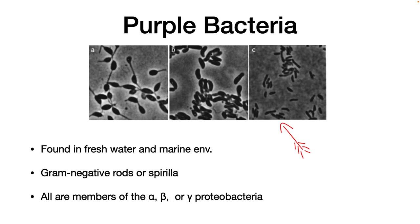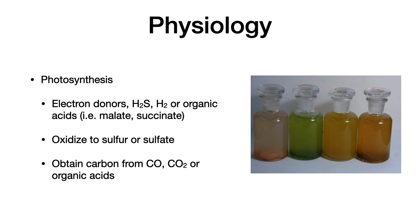All of them are members of the alpha, beta, or gamma proteobacteria. The images show examples such as Rhodomicrobium vannielii, Rhodopseudomonas acidophila, and Rhodopseudomonas palustris. The physiology of the purple bacteria. When performing photosynthesis, they can use a wide variety of electron donors, including hydrogen sulfide, hydrogen gas, and organic acids, such as malate or succinate. If they use hydrogen sulfide or other sulfur compounds, they will oxidize them to sulfur or sulfate. They obtain their carbon from carbon monoxide, carbon dioxide, or organic acids. By the way, that's right. These bacteria can obtain carbon from something that is poisonous to humans, carbon monoxide.